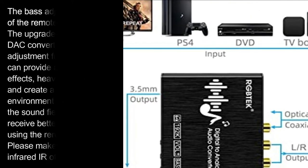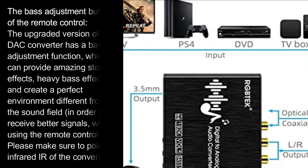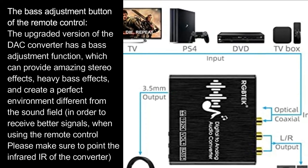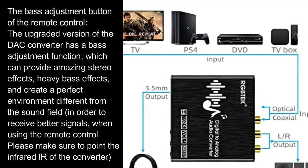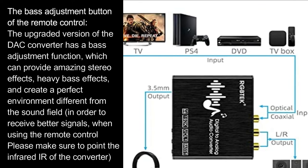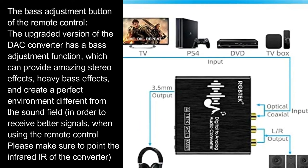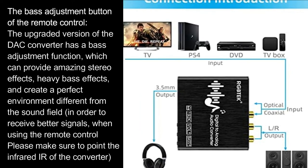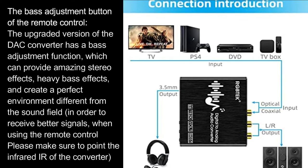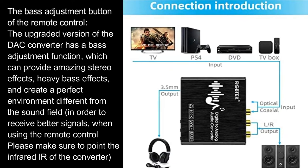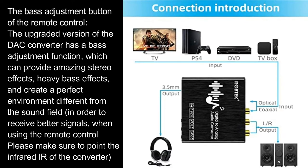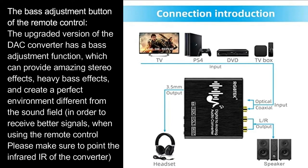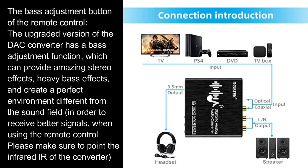The Bass Adjustment Button of the Remote Control. The upgraded version of the DAC converter has a bass adjustment function, which can provide amazing stereo effects, heavy bass effects, and create a perfect sound field environment. In order to receive better signals, when using the remote control please make sure to point the infrared IR receiver of the converter.